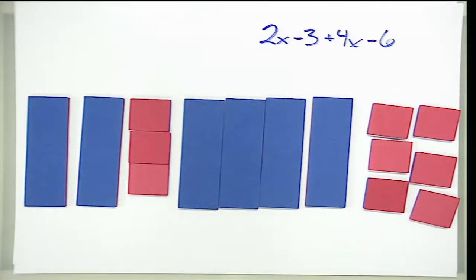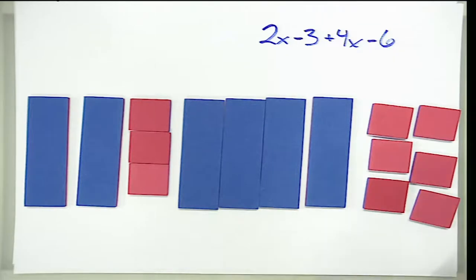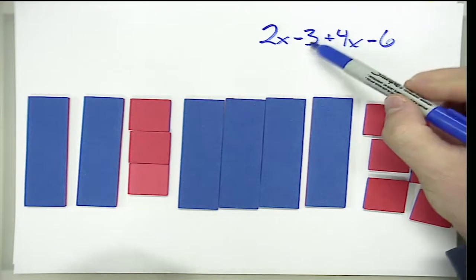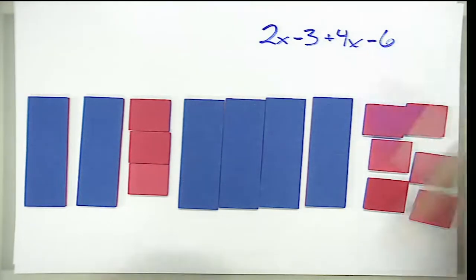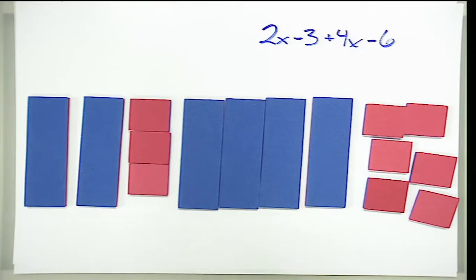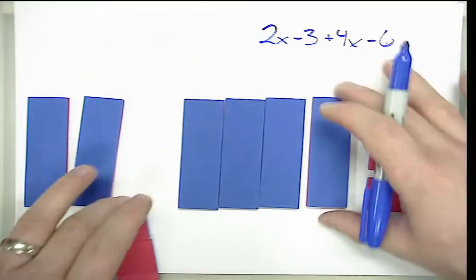One of the major issues students face is that they forget about the negative sign — they move the 6 but the minus sign stays, or they put a 3 with a minus 6 and get negative 3 instead of seeing a negative 3 and a negative 6 being added together. Here's where the manipulatives help: the positive and negative aspect is embedded in the color, so the negative sign travels with the manipulative. To show the commutative property, all we have to do is move our pieces.